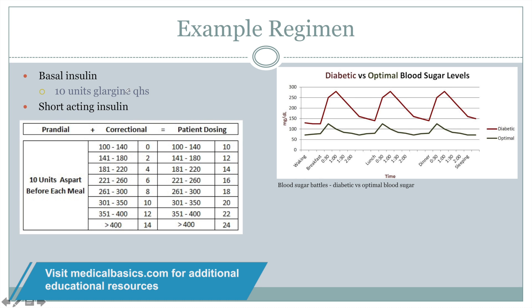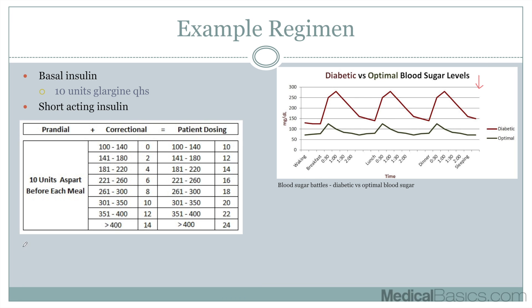So for this patient, they get 10 units of glargine at nighttime — no matter what, always. For mealtime, they always get 10 units of aspart before each meal as the prandial fixed dose, regardless of their sugar. That's the prandial component. The correctional then adds additional units based on their current glucose reading.